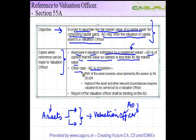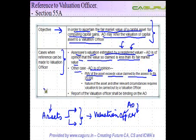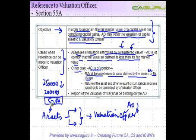The second case is where a registered valuer report has not been obtained. The AO is of the opinion that the fair market value of the asset exceeds the value claimed by the assessee by Rs. 25,000. For example, if the assessee says the value is Rs. 2 lakh while the assessing officer believes it is Rs. 2,50,000, the value exceeds by Rs. 50,000 and therefore he can refer the matter.